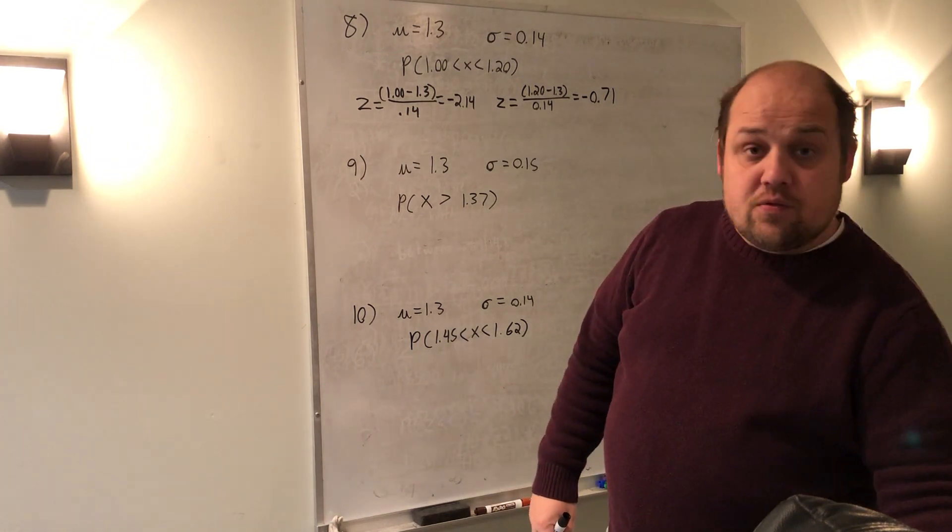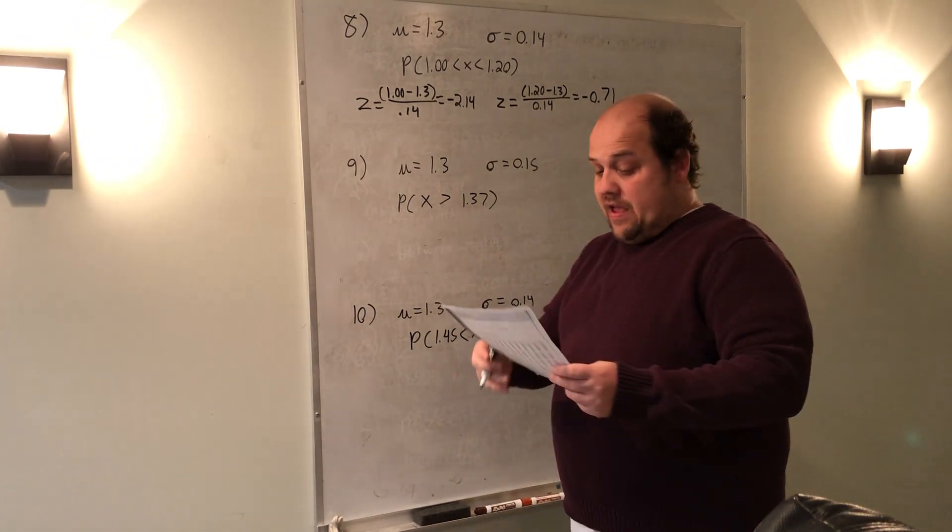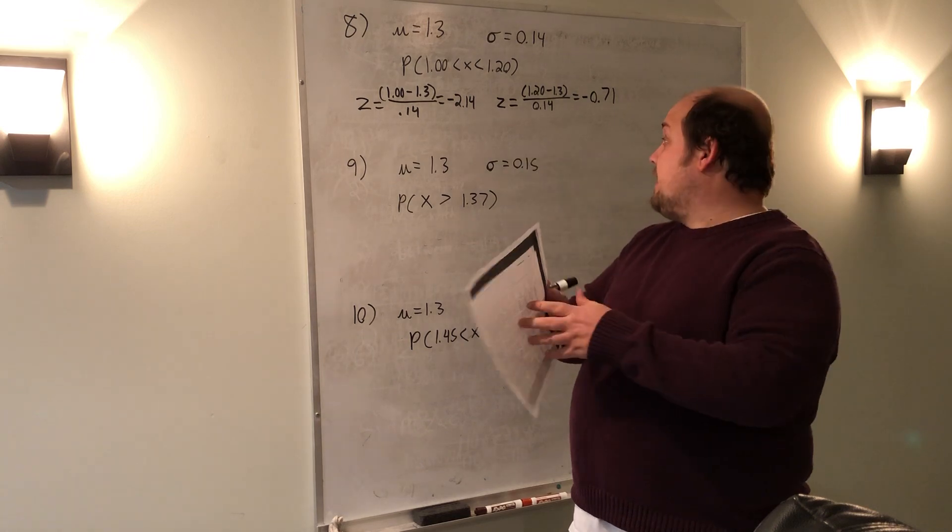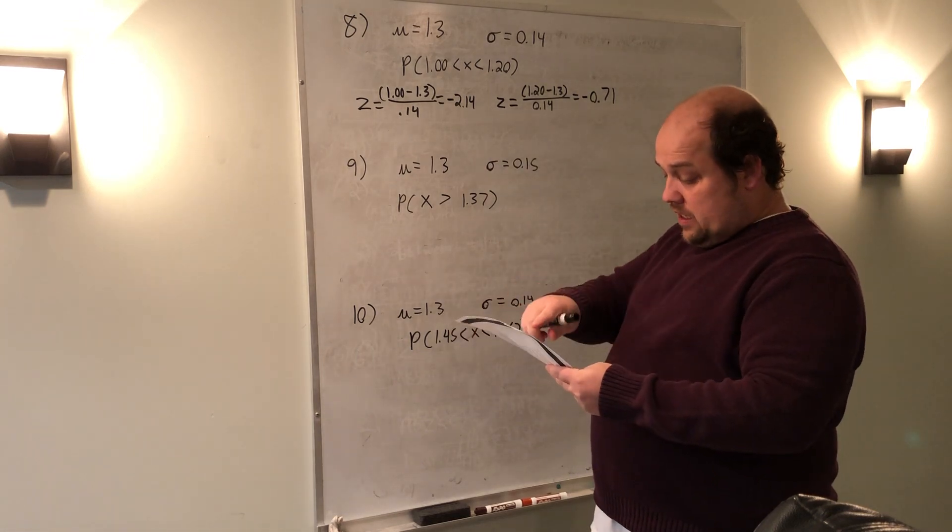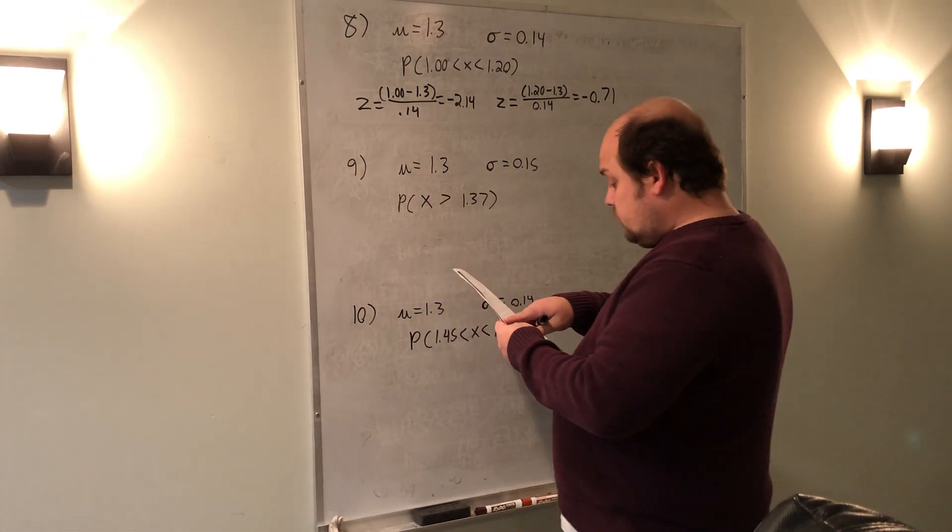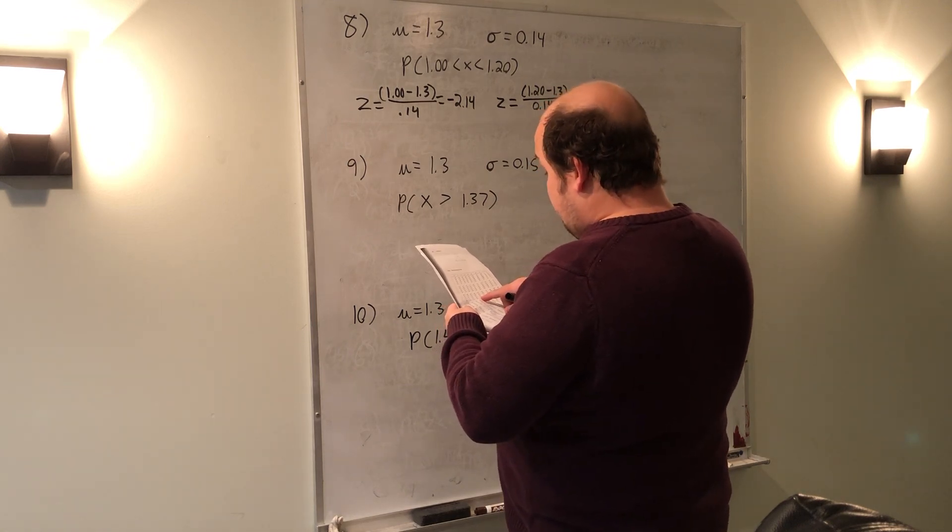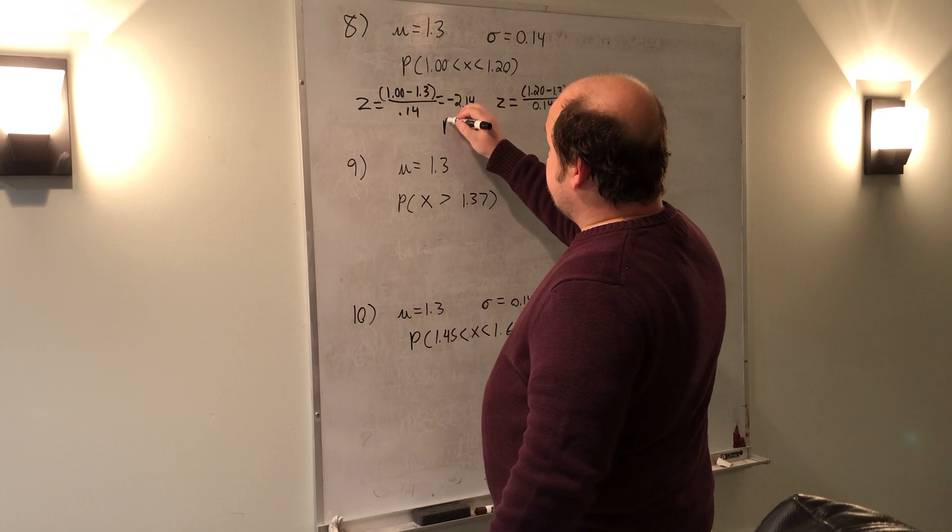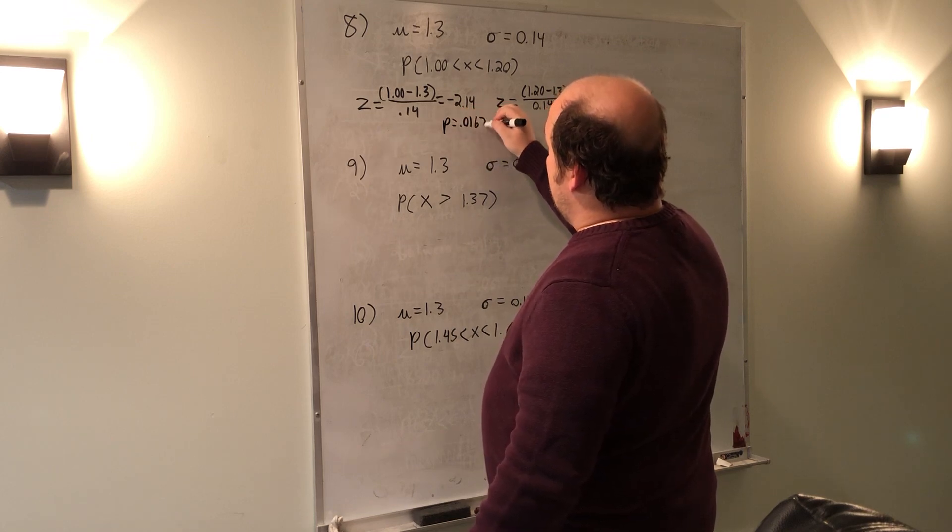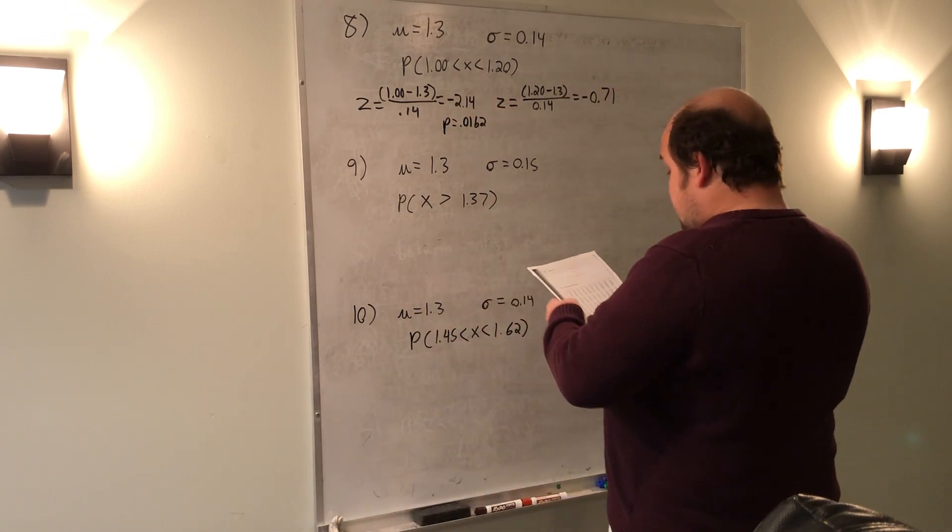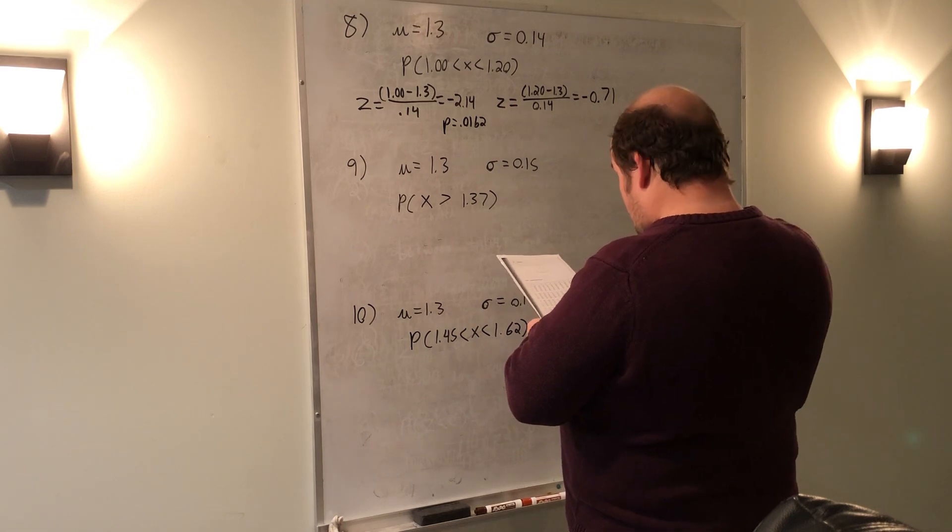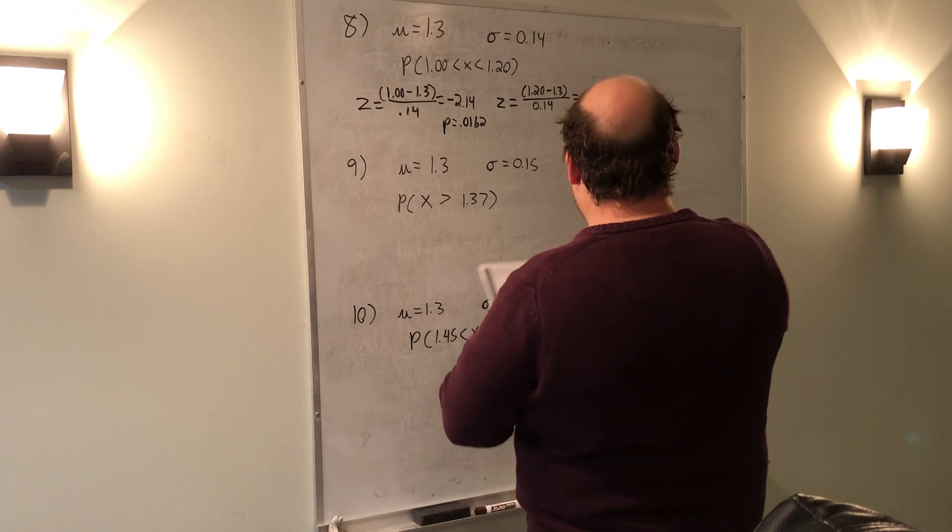So I need to take these two z-scores, look up their associated p-values on the negative side of my table. First one, negative 2.14, lines up to a p-value of 0.0162. Second z-score, negative 0.71, gets me to a p-value of 0.2389.